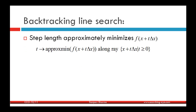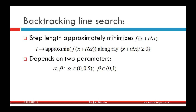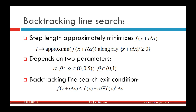Here is the inexact line search. The step length approximately minimizes f(x + t·Δx) along the ray x + t·Δx, where t ≥ 0. The backtracking line search algorithm depends on two parameters α and β, where α ∈ (0, 0.5) and β ∈ (0, 1). The exit condition — at which the algorithm terminates — is: f(x + t·Δx) ≤ f(x) + α·t·∇f(x)ᵀ·Δx. When this holds, the algorithm has found an acceptable step length t.